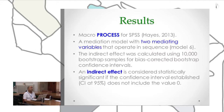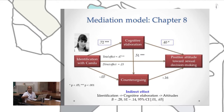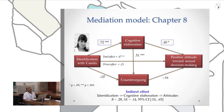Here you can see the results. I have performed one mediation model per episode, because each episode has a very different focus — sexual diversity, gender violence, or sexual decision-making. We found a statistically significant indirect effect: identification with Camila was associated with more cognitive elaboration, and this in turn was associated with more positive attitudes towards sexual decision-making.